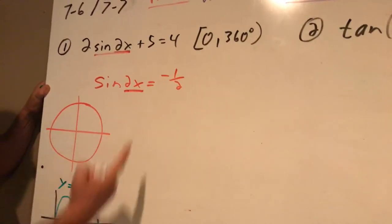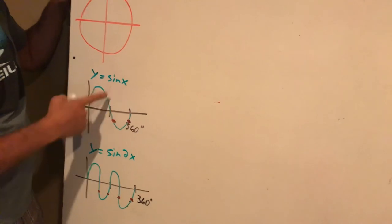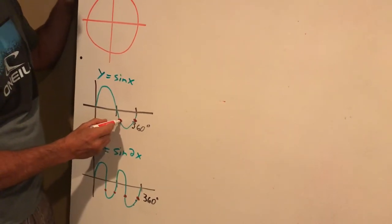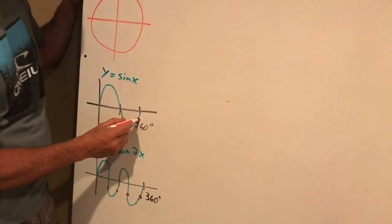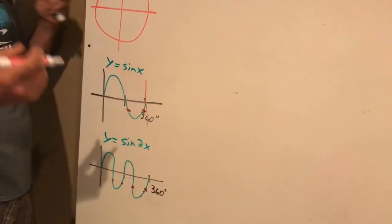And we want it to equal negative 1 half. And those are 30 degree angles. And there are two places. Remember sine is negative when it's down. And that would be, and they are 30. So that would be 210 degrees and 330 degrees right there. And those would be within our range of zero to 360. That would be our normal one that we did last week.